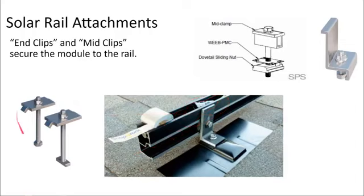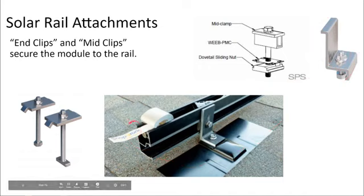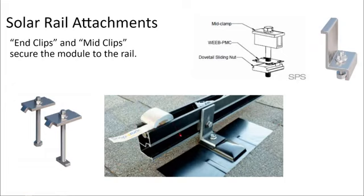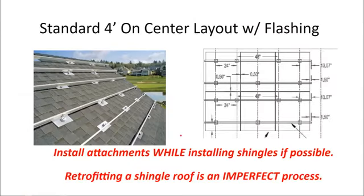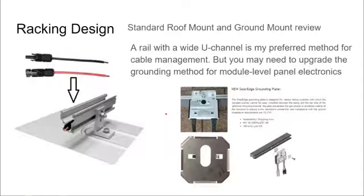Mid-clips space and clamp the solar panel onto the rail between two panels, while end-clips secure the module frame on the very end of the rail. Additional components help with grounding and splicing the rail together. Pro installers stagger the L-foot attachments to hit every rafter, considering the maximum rail span between attachments as well as wind and load requirements. Like inverter sizing software, racking manufacturers provide online design tools to assist in racking design and bill-of-material development, sometimes including structural load evaluation data.